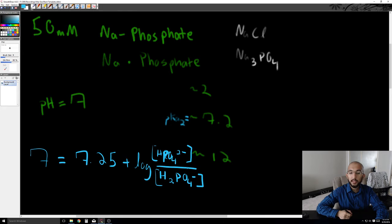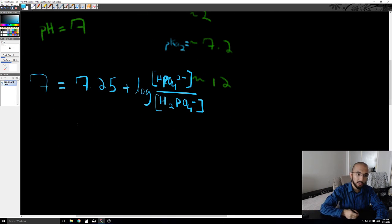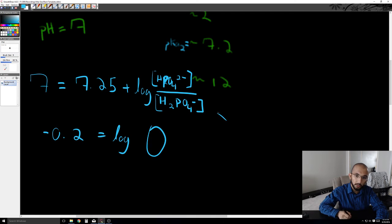So you'd use this, and basically you'd solve - you'd subtract on both sides, so you'd get negative 0.2-something is equal to log of this ratio here.